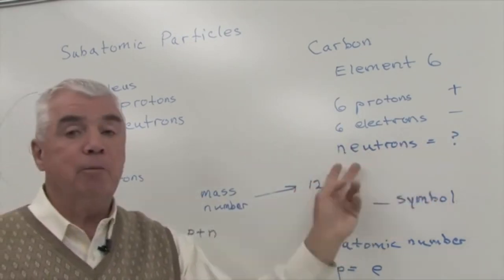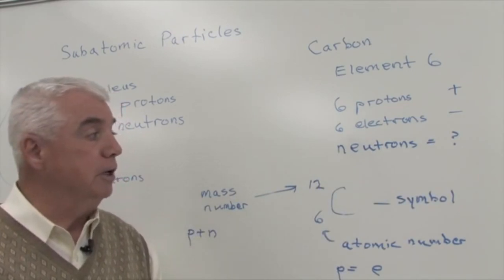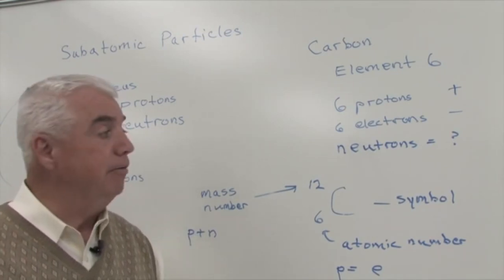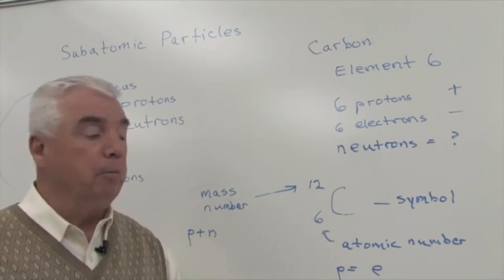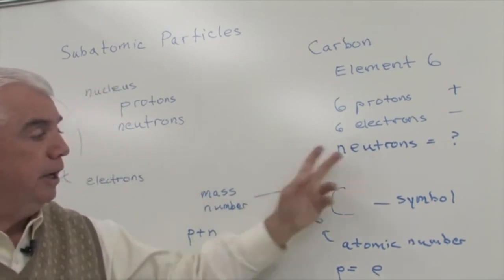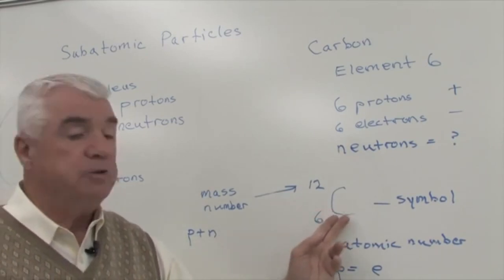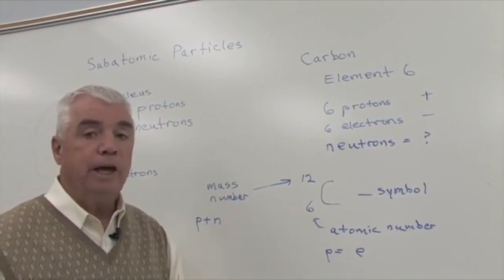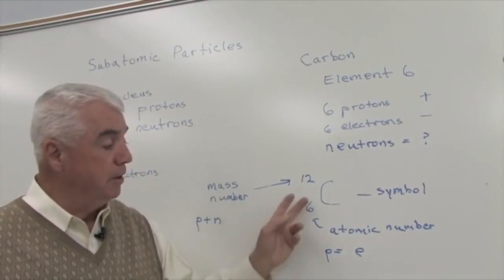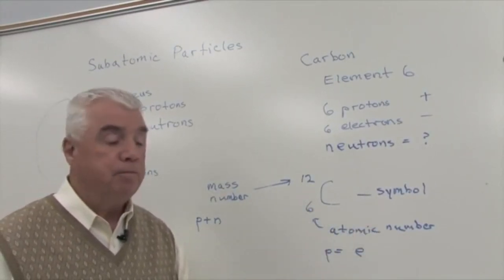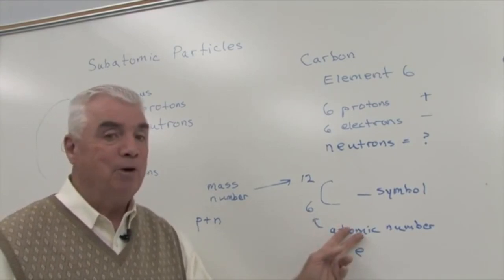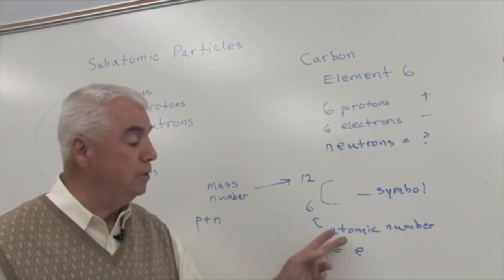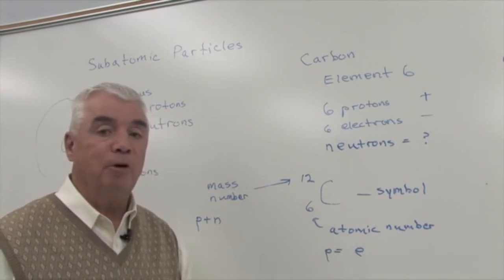But it doesn't give us information about the number of neutrons. Neutrons are neutral, and we have to have an additional piece of information if we're to specify the number of neutrons. And here I've given some additional information. Here's the elemental symbol for carbon, the capital C. This lowercase number is called the atomic number. And we know that it's also the sequence number on the periodic chart of the elements, that it's equal to the number of protons, that it's equal to the number of electrons.